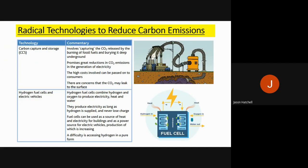Finally, we need to look at radical technologies to reduce carbon emissions. There are two main approaches: carbon capture and storage (CCS), and hydrogen fuel cells and electric vehicles. CCS involves capturing the CO2 released by burning fossil fuels and burying it deep underground before it enters the atmosphere. This promises great reductions in atmospheric CO2, but it is very costly, with high expenses passed on to consumers. There are also concerns that CO2 may over time leak back to the surface through the pores of the soil above.